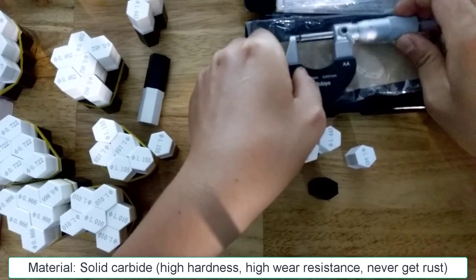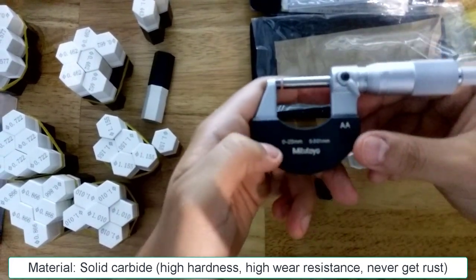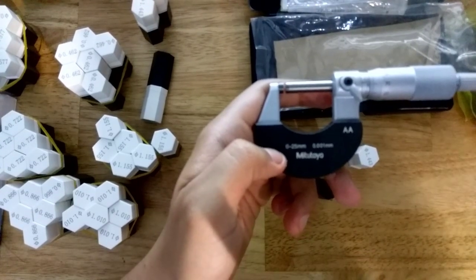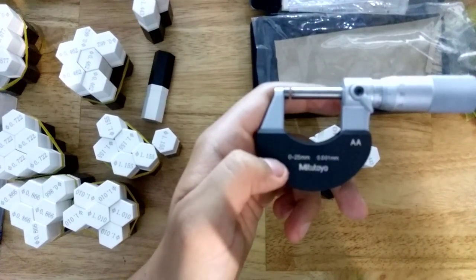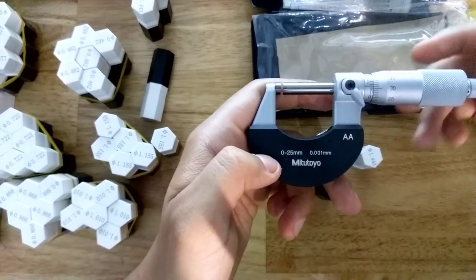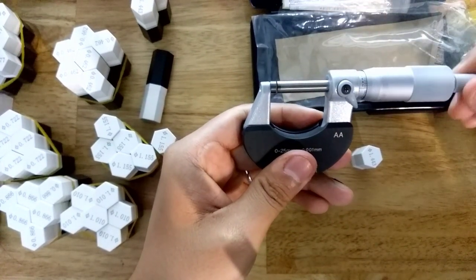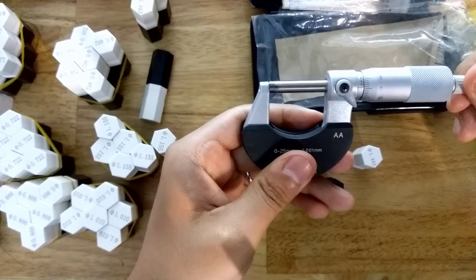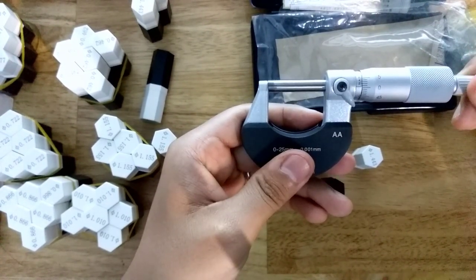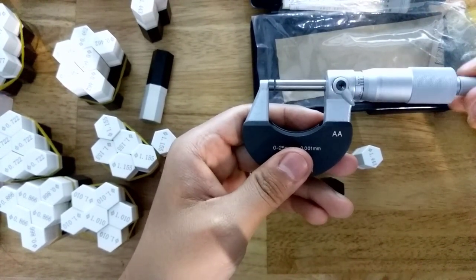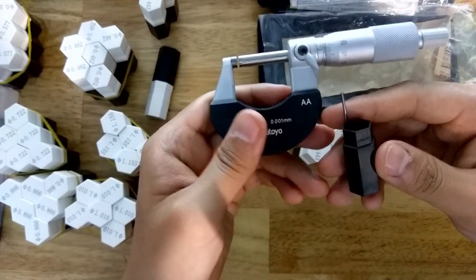And talking about the tolerance, I make this wire with the tolerance within plus and minus one micrometer. That's equal to 0.001 millimeter, very high precision.